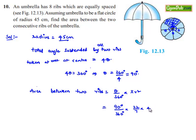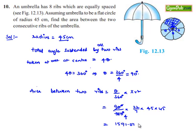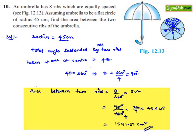Therefore, the area equals 90/360 into 22/7 into 45 squared. Here 90 divided by 360 gives 1/4, so the area equals 22 times 45 times 45 divided by 28, which gives 1591.07 centimeters square. Therefore, the area between two consecutive ribs of the umbrella is 1591.07 centimeters square.